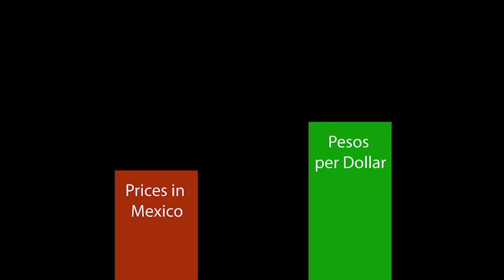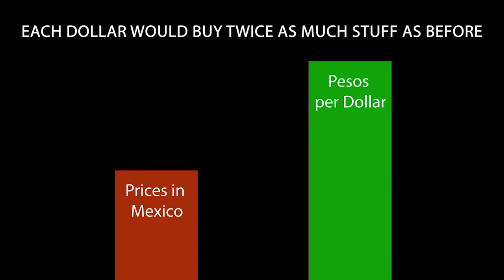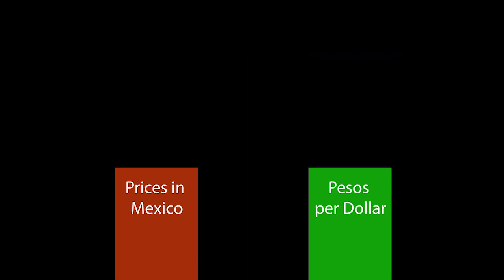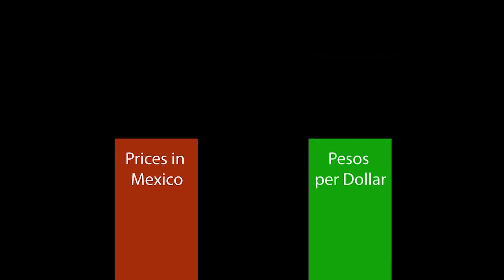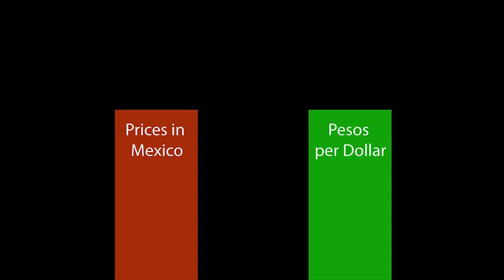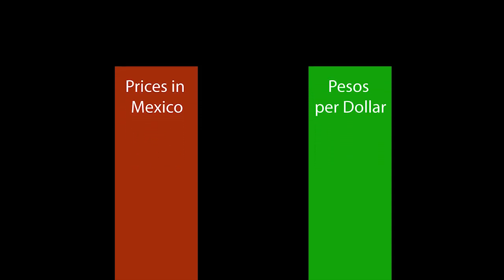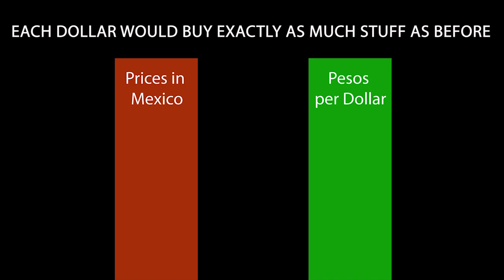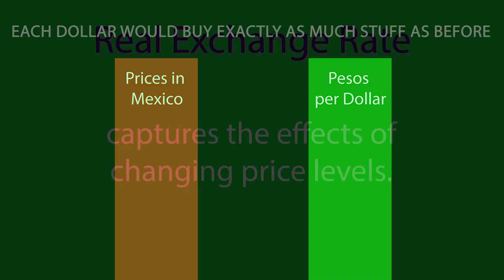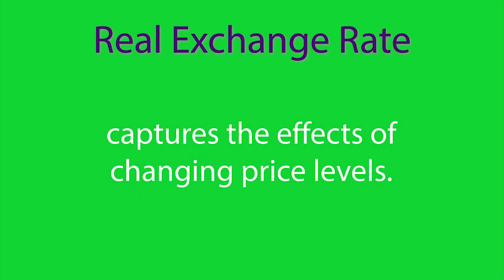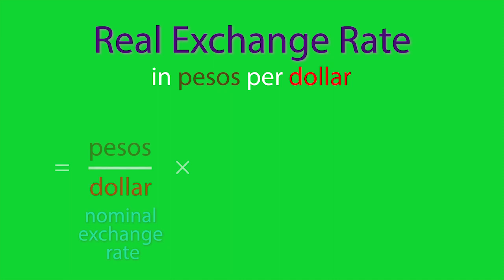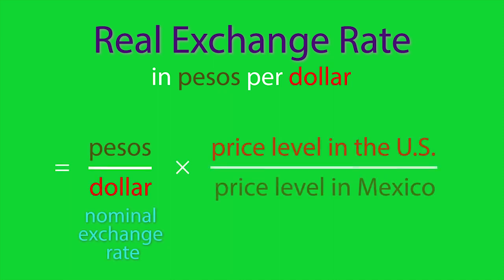Your boss is thinking that the new nominal exchange rate would allow you to buy the same amount of stuff in Mexico with half as many dollars. That would be true if prices remained the same while the nominal exchange rate changed. But what if prices in Mexico doubled over the period when the US dollar appreciated enough to buy twice as many pesos as before? Each dollar would buy exactly as much stuff as before. So it's important to capture the effects of changing price levels by calculating the real exchange rate. To find the real exchange rate in terms of pesos per dollar, multiply the nominal exchange rate by the ratio of the price level in the United States to the price level in Mexico.